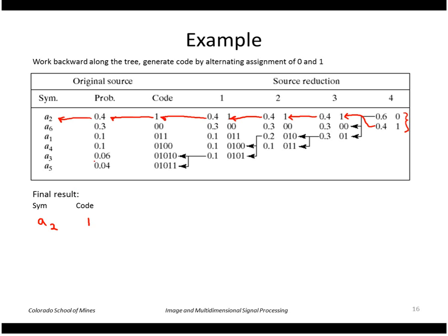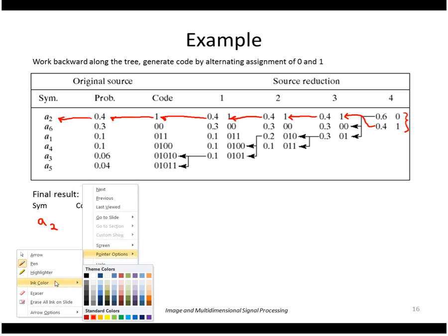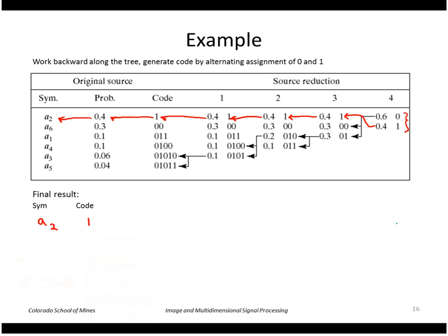Okay so let's do another one. Got a color here. If I take the 0, now that actually was produced by multiple symbols and so I need to append another binary digit, a 0 and a 1, to that 0. So take this first one, the 0 0, that came from symbol a6. So a6 has the symbol 0 0.